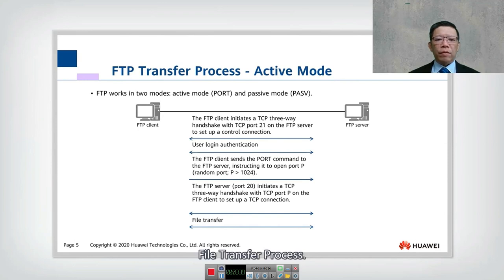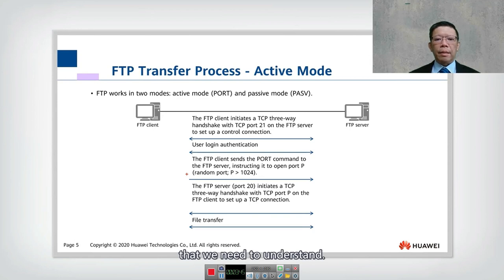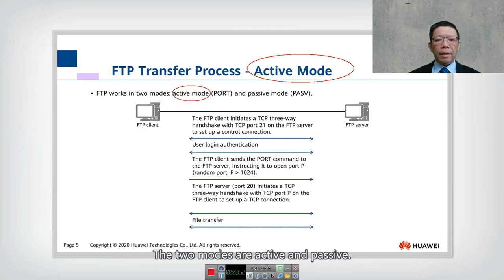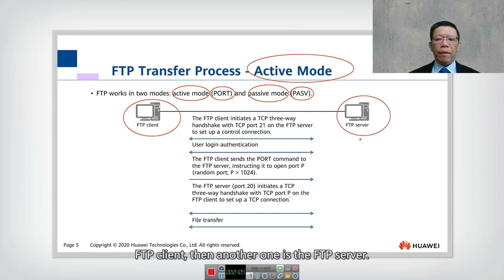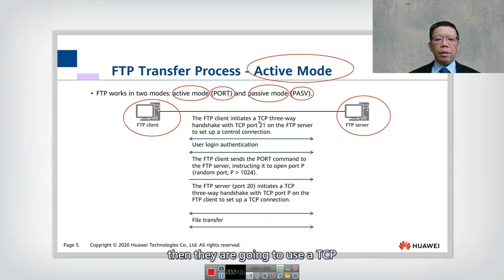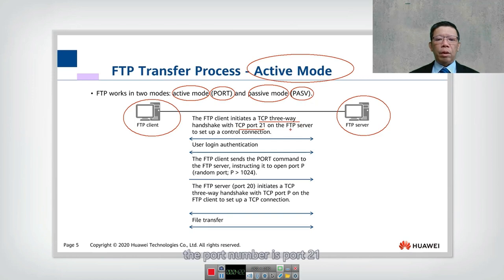Now let's look at the file transfer process. FTP works in two modes: active and passive. The commands used are PORT and PASV respectively. In the active mode, we have an FTP client and an FTP server. Since FTP uses TCP, they perform a TCP three-way handshake. The client initiates this handshake to the FTP server at port 21.